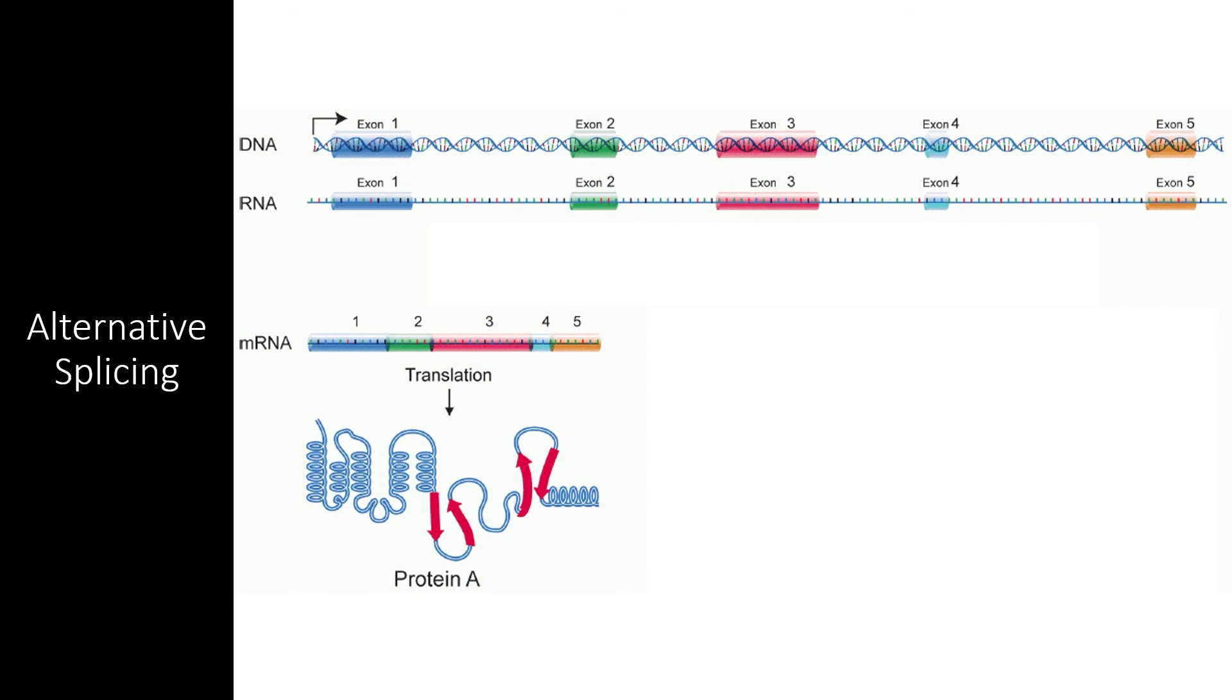The human genome encodes roughly 21,000 protein-coding genes. However, this is only a tiny fraction of the total variation created into actual proteins. This extra variation is created through the process of alternative splicing.